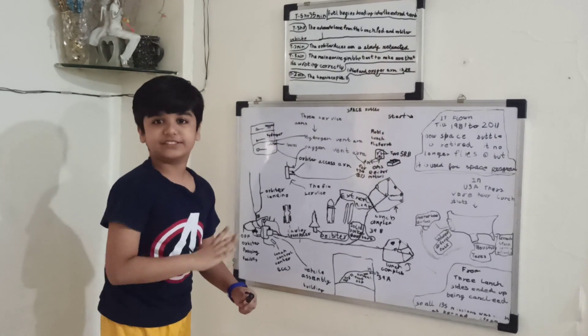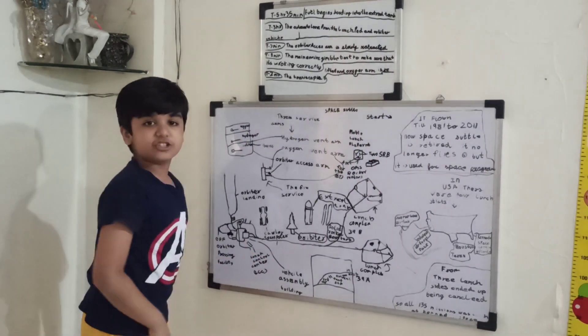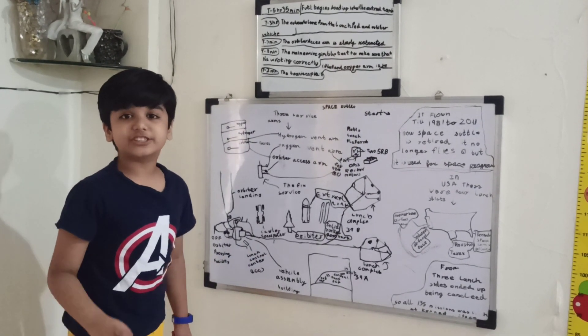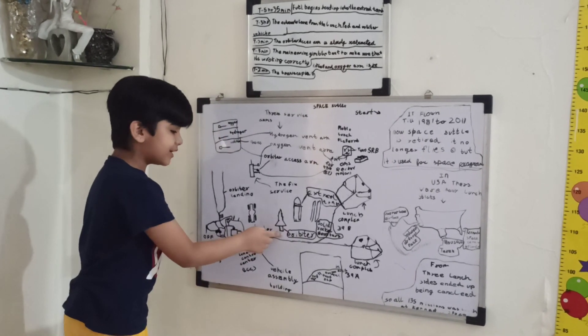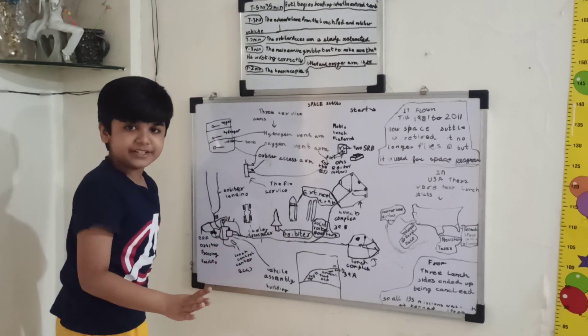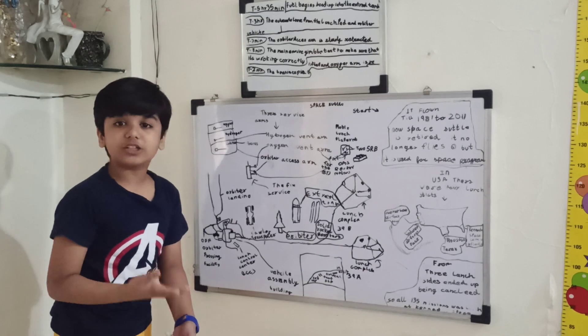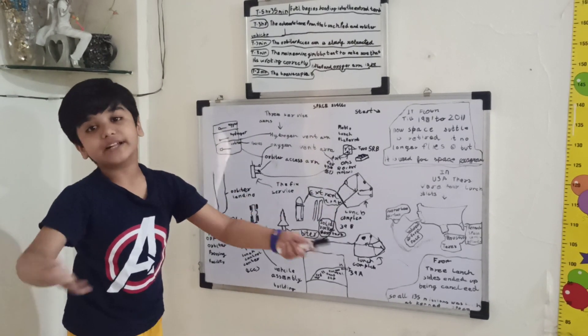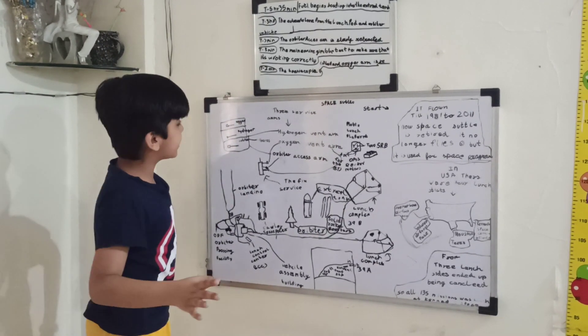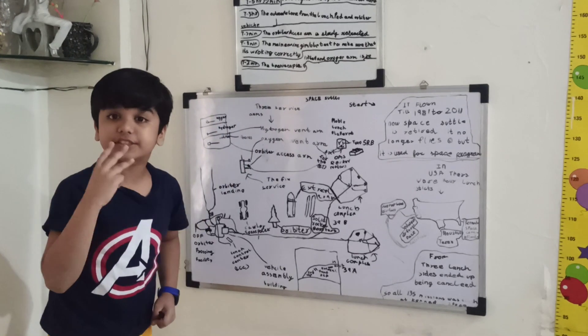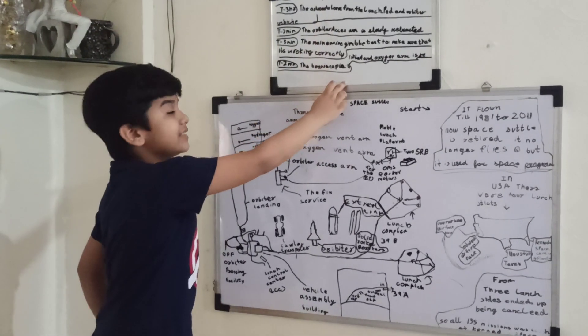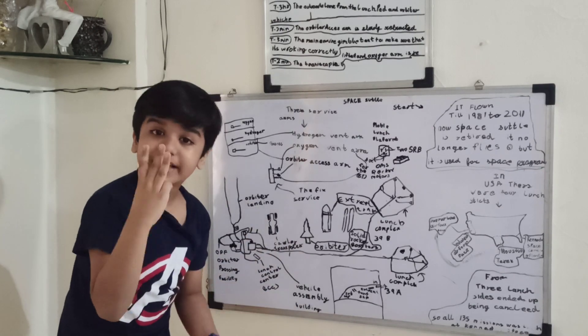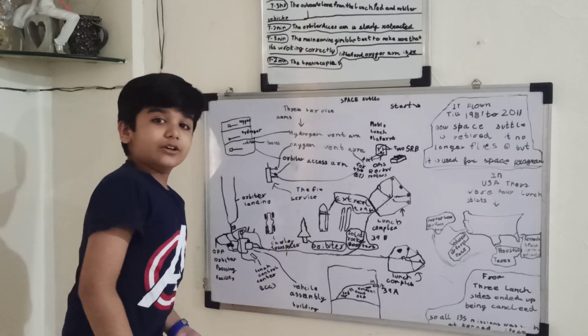At T minus 10 seconds, it activates the hydrogen burn-off system. It doesn't start the engines. It's located at the orbiter near the three main engines to prevent an unexpected explosion at launch. T minus 6.6 seconds, then the three main engines are activated.